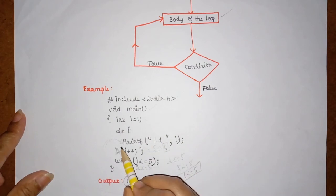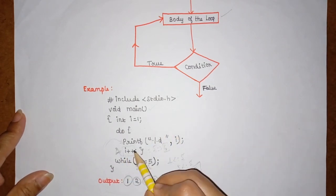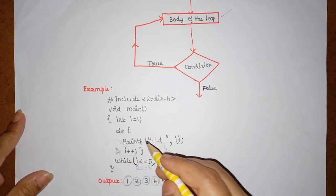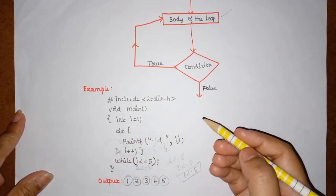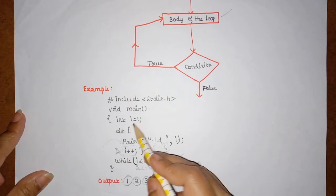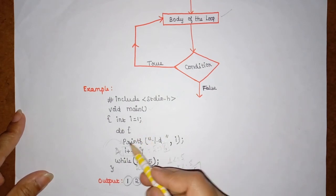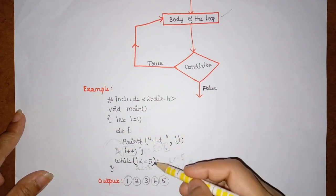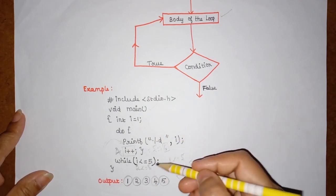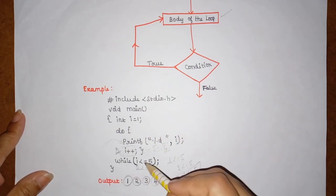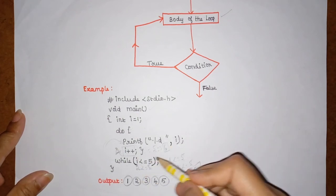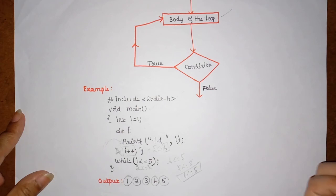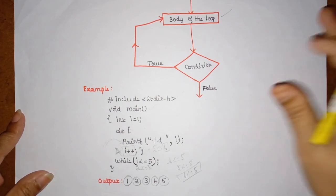Note that the increment statement is important inside the do block. If the increment is not given, the value of i always remains one. Every time the condition is checked it becomes true, and the loop executes for an infinite number of times — an infinite loop.